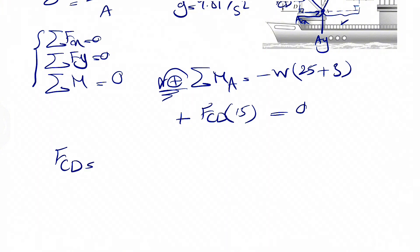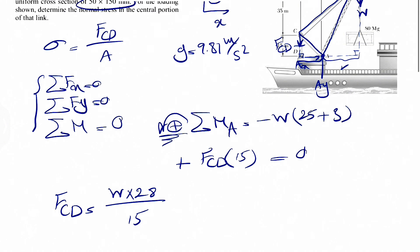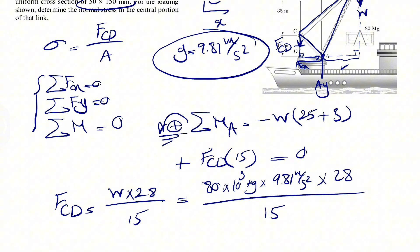So we should be able to find F_CD, which would be weight times 28 divided by 15. So we just have to find the weight. We know our g is 9.81 meter per square second. So weight would be mass times acceleration of gravity or g. The mass is 80 megagram. And if you want to convert it to kilogram, we know mega is 10 to the 6. So we're going to have 80 times 1000. That's going to give us kilogram. And if we multiply this by g, we're going to get the force in newtons.